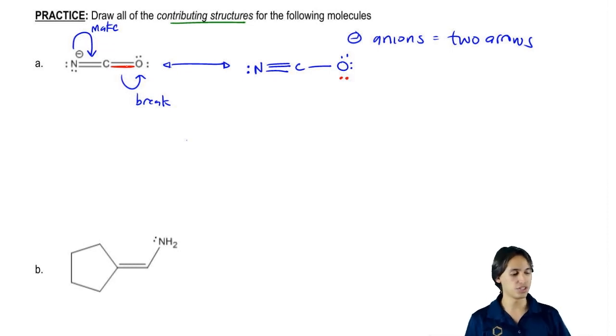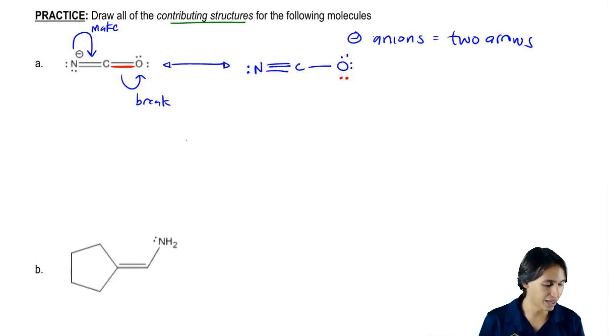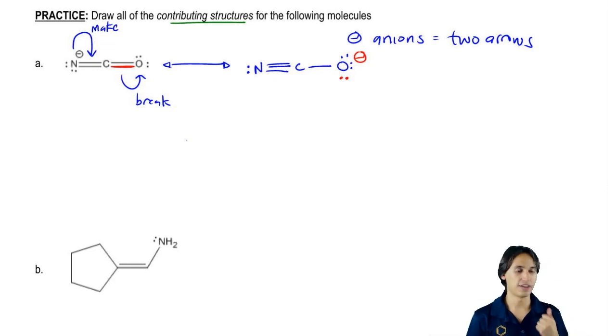So now we have to do formal charges. So I would have a negative right here on the O. And then would I have any other charges that I have to worry about? No. The carbon is fine and the N is fine. So really that's it. I just got my resonance structure.